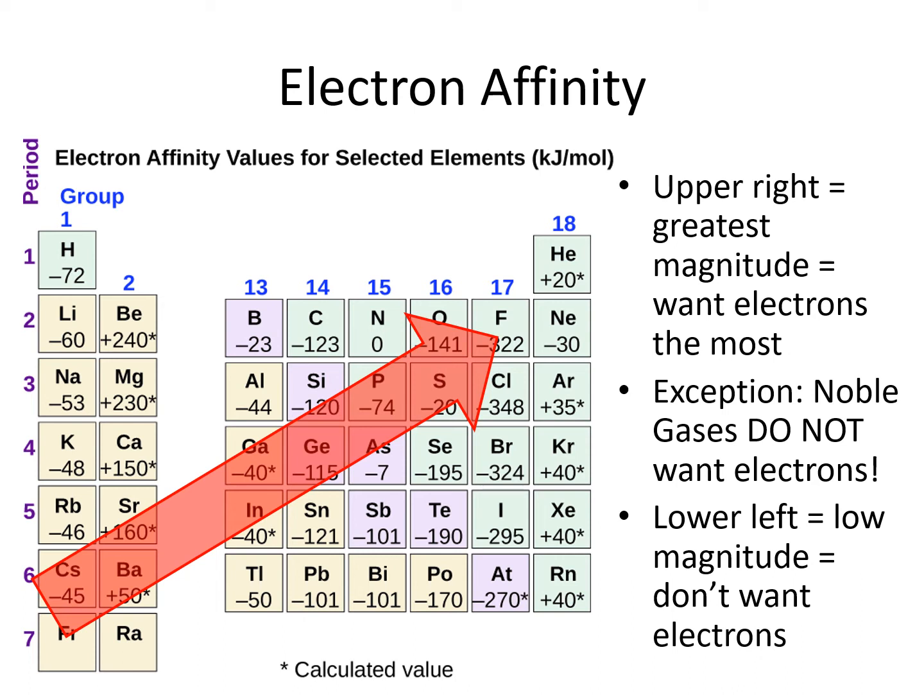The exception to the overall trend is the noble gases. Even though they are on the right side of the periodic table, they do not want electrons. The noble gas exception makes the trend for electron affinity slightly different than the trend for ionization energy, so make sure you know which is which.